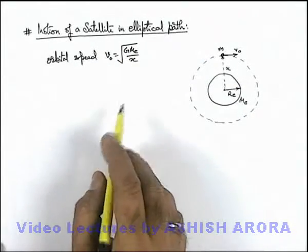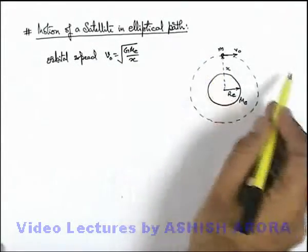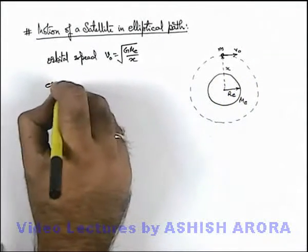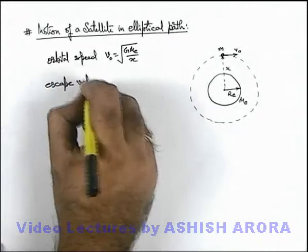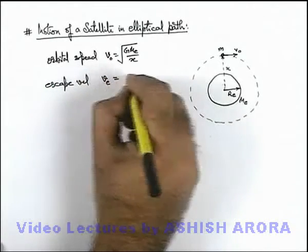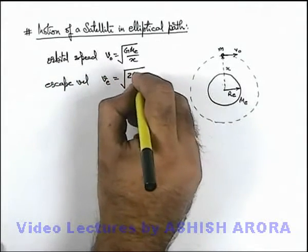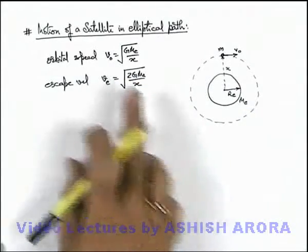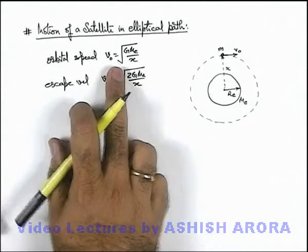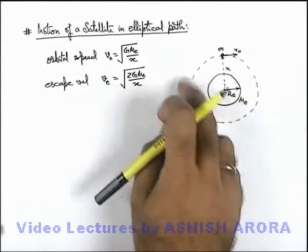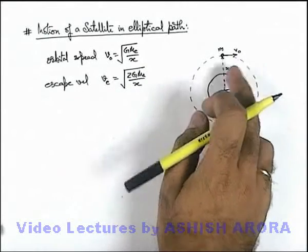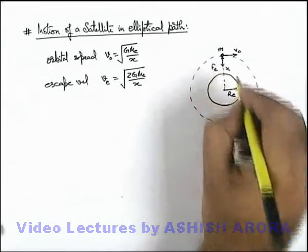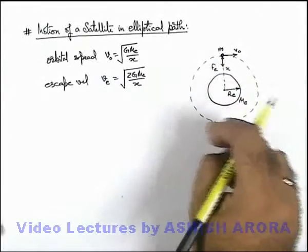We already studied that to escape the satellite from the gravitational attraction, its escape velocity can be written as vₑ = √(2GMₑ/x). At speed √(GMₑ/x), the satellite is moving in a circular orbit because the gravitational force acting on it in the inward direction is providing the centripetal force for its circular motion.